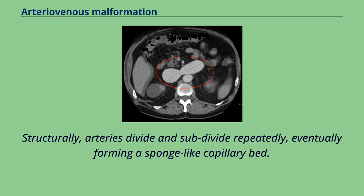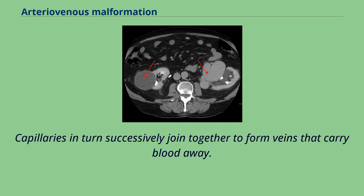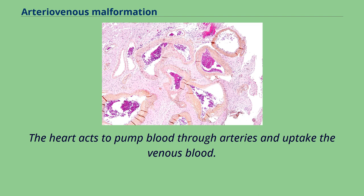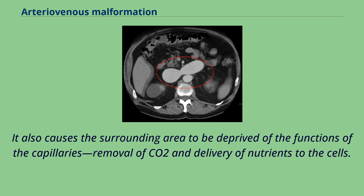Structurally, arteries divide and subdivide repeatedly, eventually forming a sponge-like capillary bed. Blood moves through the capillaries, giving up oxygen and taking up waste products, including CO2, from the surrounding cells. Capillaries in turn successively join together to form veins that carry blood away. The heart acts to pump blood through arteries and uptake the venous blood. As an AVM lacks the dampening effect of capillaries on the blood flow, the AVM can get progressively larger over time as the amount of blood flowing through it increases, forcing the heart to work harder to keep up with the extra blood flow.